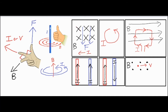Remember it's the right-hand rule, so make sure you put your pen down if you're right-handed and use your right hand. For the second case, we wrap our fingertips around. Using our right hand and letting our fingers curl counterclockwise, our thumb points straight out of the page — so the magnetic field is going outward.